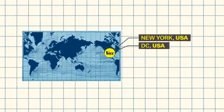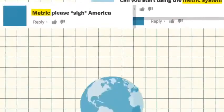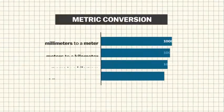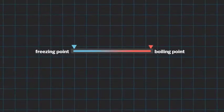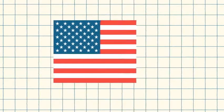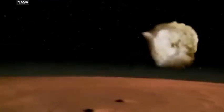Besides the fact that the majority of the world uses it, the metric system makes conversions a lot easier. The Celsius scale has freezing and boiling points at nice round numbers — zero and 100 — whereas Fahrenheit is a bit of a mess. America's unwillingness to switch to the metric system has had serious consequences. In 1999, a 125-million-dollar satellite sent to Mars disappeared in the Martian atmosphere, largely due to a conversion error between US and metric measurements.